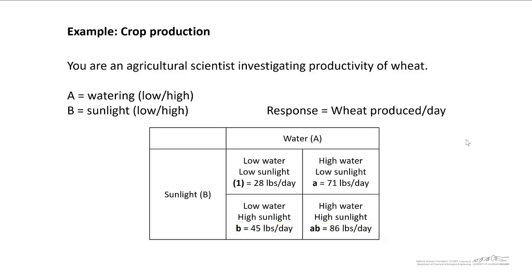Let's go back and revisit an example that I've talked about a couple of times. You're an agricultural scientist investigating productivity of wheat. We have two different factors, watering and sunlight, and the response is wheat produced per day. So you go out there, you collect some data with these four different experimental combinations, and here's what we get.